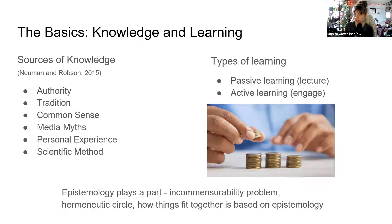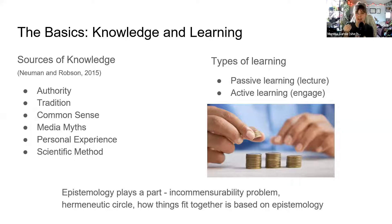Active learning is where students and learners are actively engaged with the material being presented. It requires learners to engage by summarizing, synthesizing, problem-solving, and applying the concepts and knowledge obtained. Epistemology plays a large part in learning — how we view and accept information has a big impact on how we learn. Sometimes when epistemology doesn't line up with the teaching style, the information doesn't get through to learners — that's the incommensurability problem.